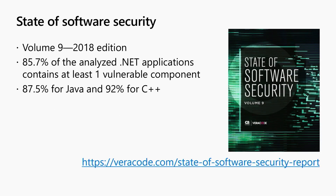Throwing in some metrics — this is a report we produce once a year containing statistics of applications we've analyzed. In last year's edition, almost 86% of .NET applications we analyzed have at least one vulnerable component inside. Java is almost 88%, and C++ is 92%. It's quite significant. If you want to see the report, you can go to the link.